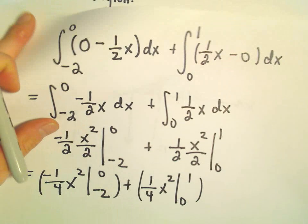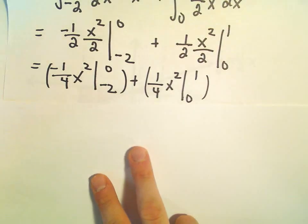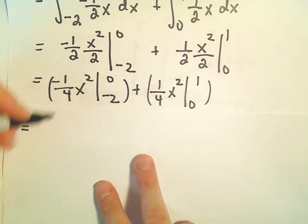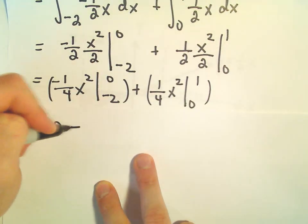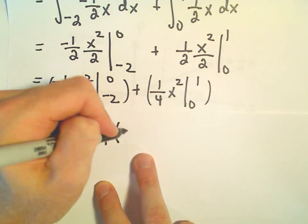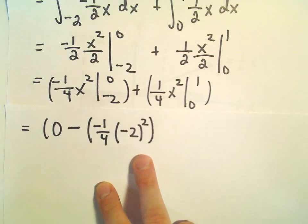So just a little more arithmetic. Notice for this first part, when we plug in 0, we're just going to get 0. And then minus the lower limit, so we would have negative 1 fourth. And then x is negative 2 squared.